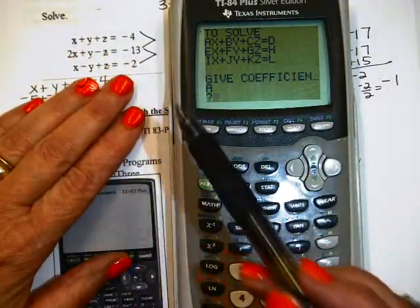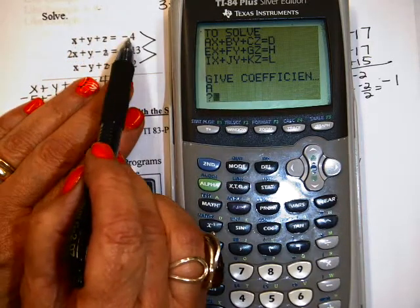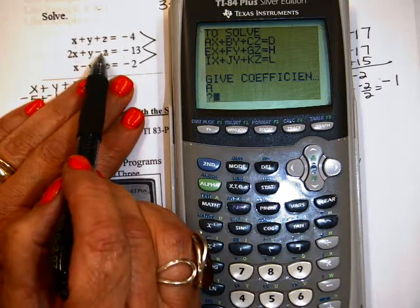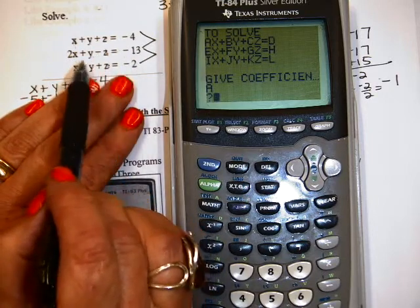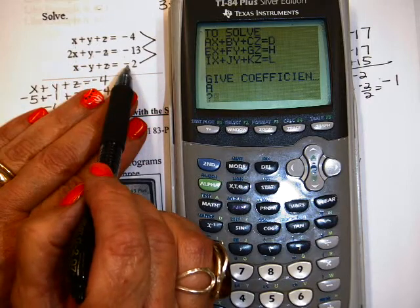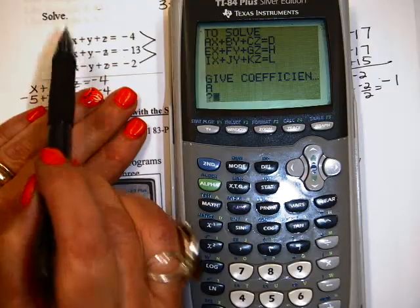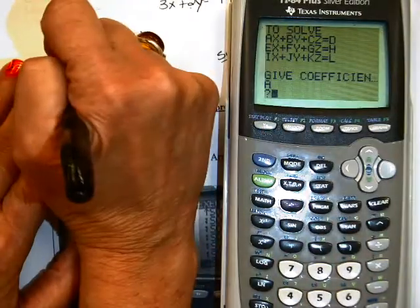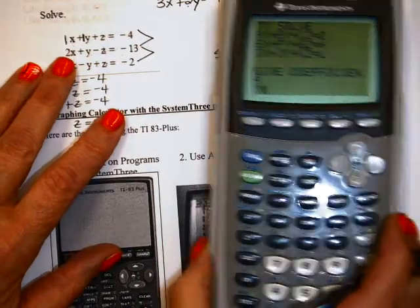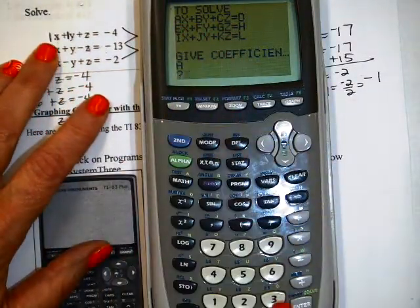So what you do is, this is my system I wanted to solve. And my coefficients are 1, 1, 1, my constant negative 4. 2, 1, negative 1, negative 13. 1, negative 1, 1, negative 2. So those are your understood coefficients. If you need to write them in, you can. But I think y'all probably can handle that without doing that. So I'm just going to go through putting those in.